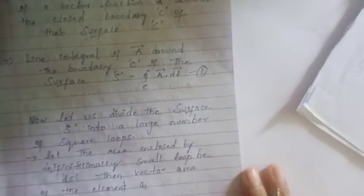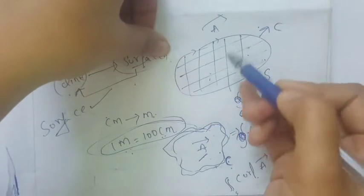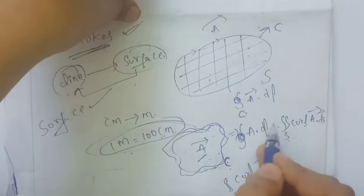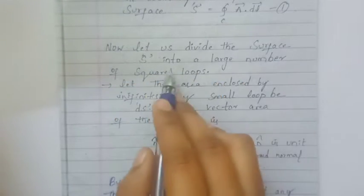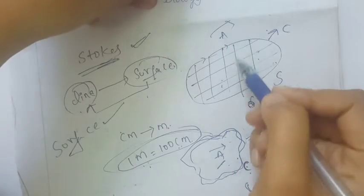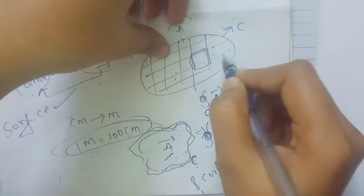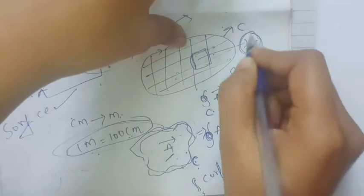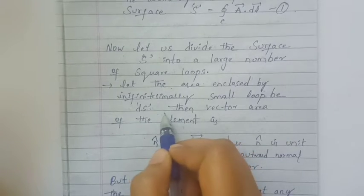Now let us apply the surface S. We have to divide the surface S into a large number of small square loops. Divide into m small loops, and let the area enclosed by each small loop be dS.